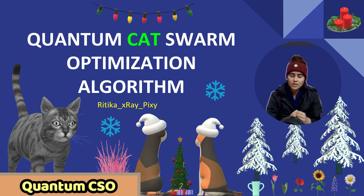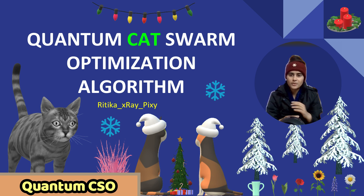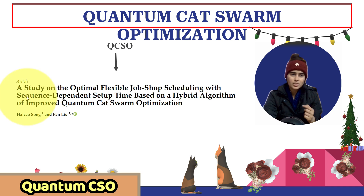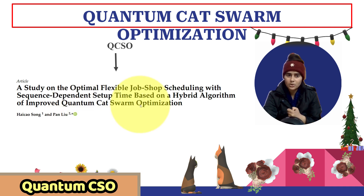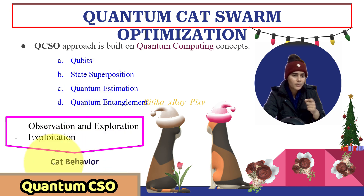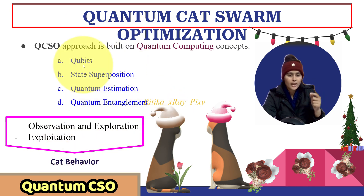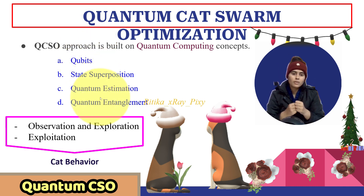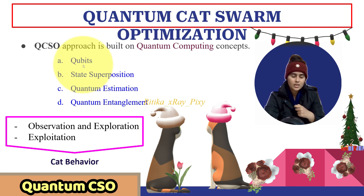Now we have quantum cat swarm optimization algorithm. This is a quantum-inspired optimization algorithm that is inspired by different quantum computing principles. In this algorithm, different quantum computing principles are used to find out the optimal solution. For reference, you can use this research article where the author used the improved quantum cat swarm optimization algorithm for flexible job scheduling. Quantum cat swarm optimization algorithm combines the principles of quantum computing and cat behavior to find out the optimal solution.